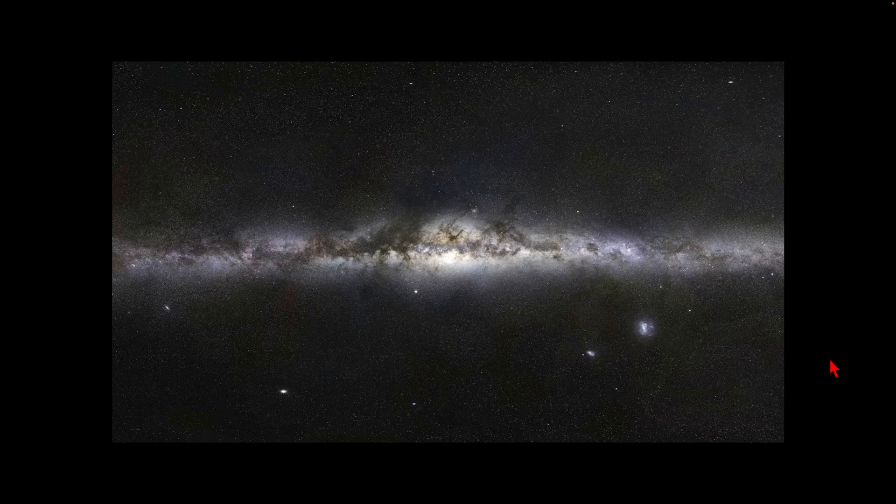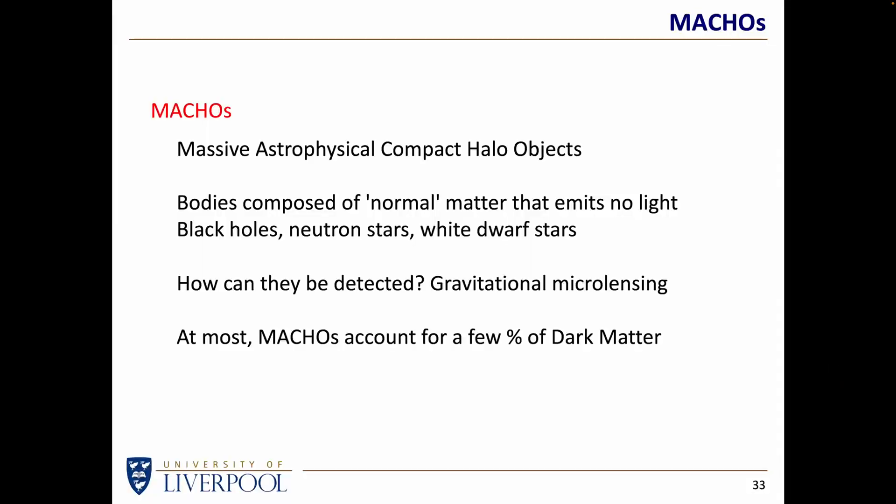MACHOs do exist and are there, but at best they can account for a few percent of the dark matter we're looking for. So MACHOs do not appear to be the answer. Some people argue we're just looking for MACHOs of the wrong size — maybe not stellar-sized black holes but lots of tiny black holes. Perhaps, but they'll be much more difficult to find.